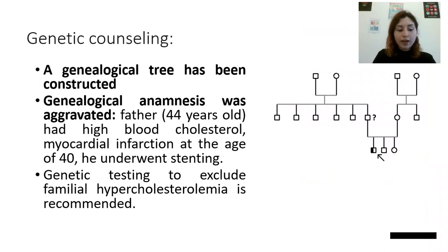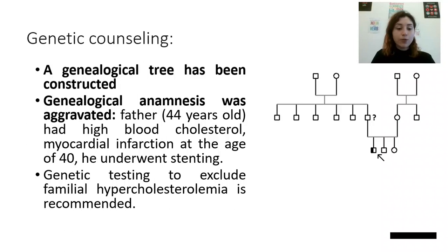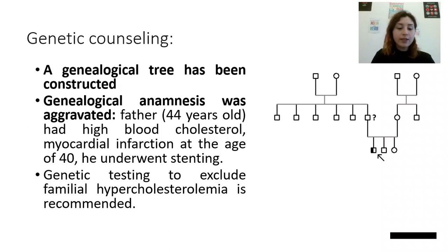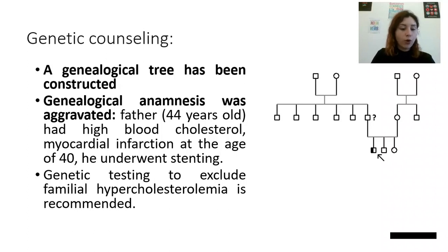During the genetic counseling, we made a family tree and reviewed the patient's family history. It turned out that his father was 44 years old, had high blood cholesterol, myocardial infarction at the age of 40, and underwent stenting. Genetic testing to exclude this pathological condition is recommended for the whole family.